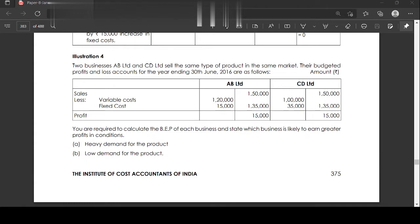Sales for both AB Limited and CD Limited, same now, $1,50,000. Next, costs. Variable cost AB Limited $1,20,000, CD Limited $1,00,000. Fixed cost AB Limited $15,000, CD Limited is $35,000.